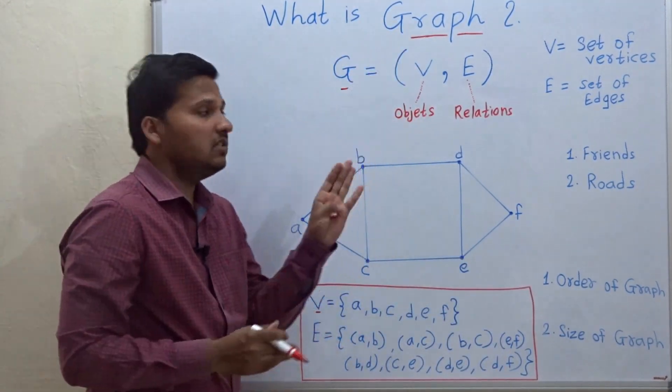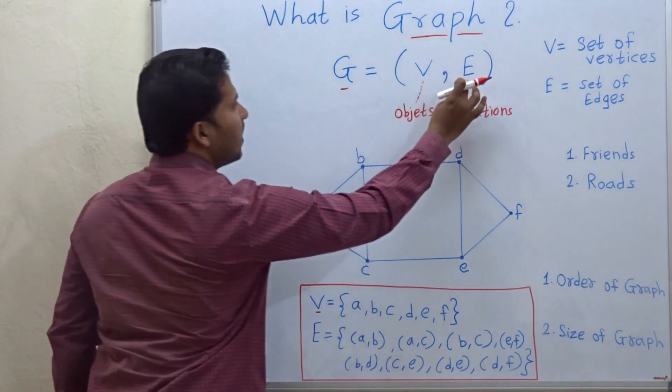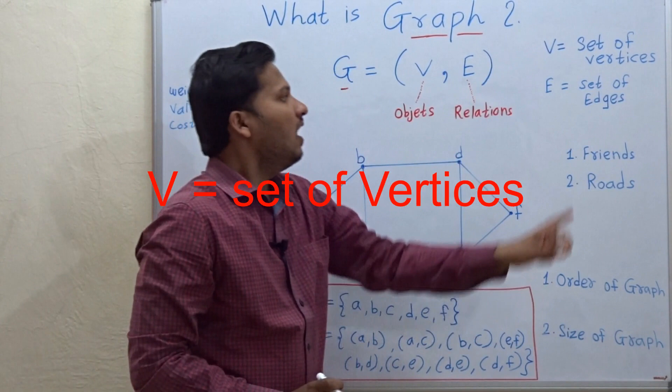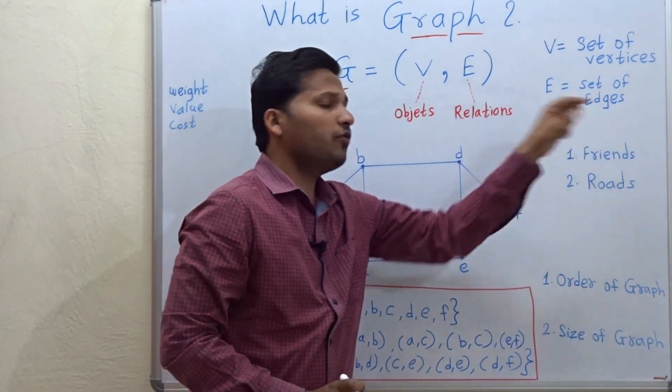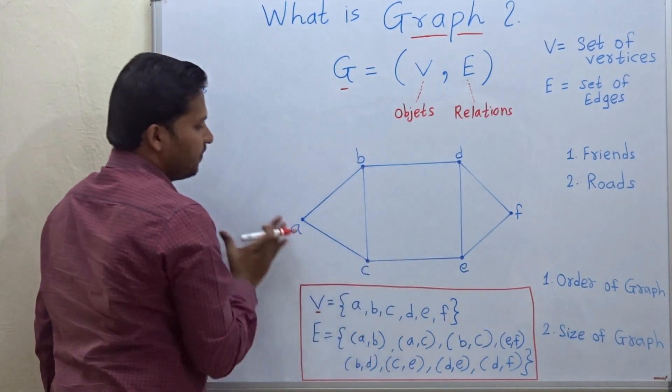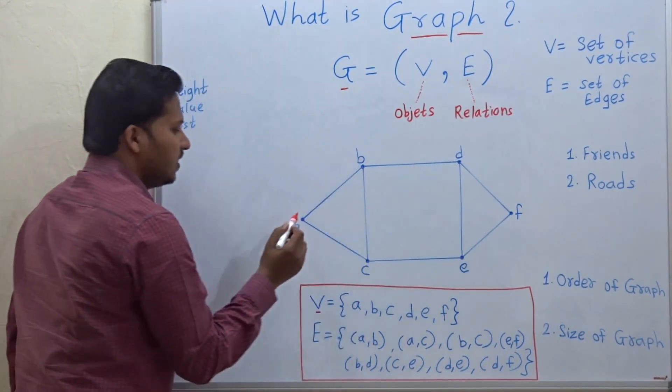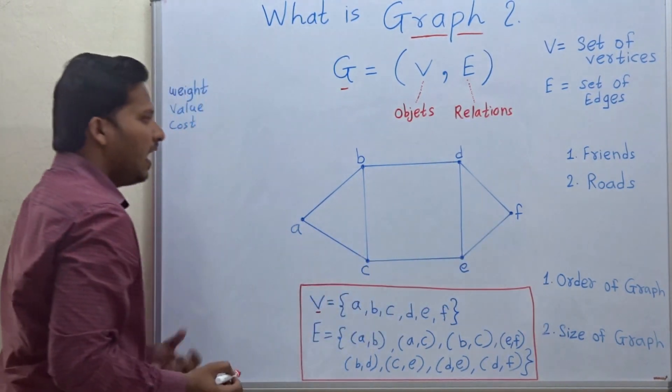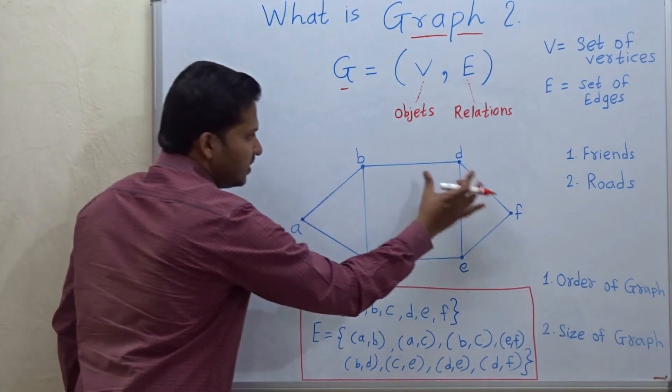A graph G is equal to V, E where V is equal to a set of vertices and E is equal to set of edges. So you can see here in this graph there are 6 vertices. They are a, b, c, d, e, f and there are 8 edges.